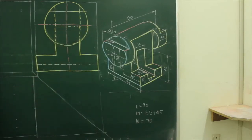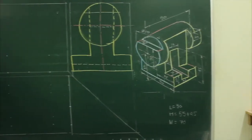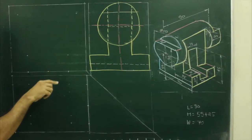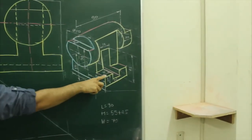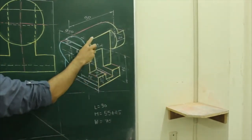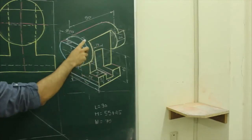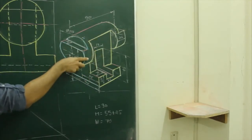We are done with the side view. Now we will draw the front view. In the main diagram, when you see from the front, you will see a U-shape, then again a U-shape, and two circular portions which will appear as a rectangle.